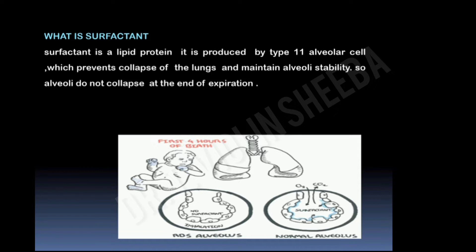You can see two pictures on screen. The first picture indicates normal alveoli. The blue color indicates the presence of surfactant in the lungs. When surfactant is present, the lung remains stable and the alveoli will not collapse. But in the case of RDS, there is no surfactant. This leads to increased surface tension, and during expiration the alveoli collapse. Comparing the two pictures: when surfactant is present the alveoli do not collapse; when there is no surfactant the alveoli collapse.